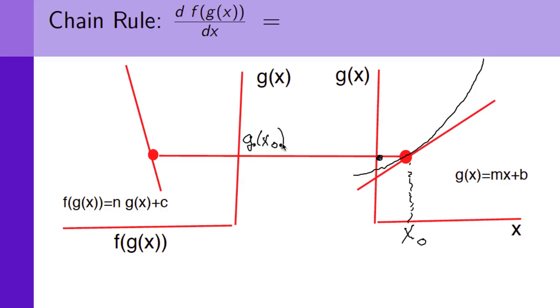Associated with g of x zero is a function f of g of x zero. So let's try to draw that in as a smooth curve.